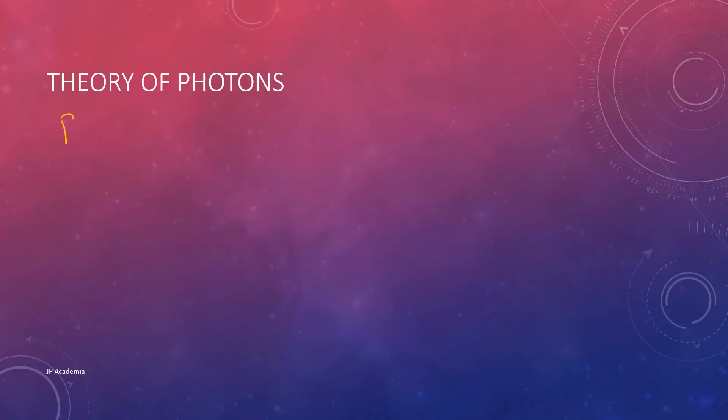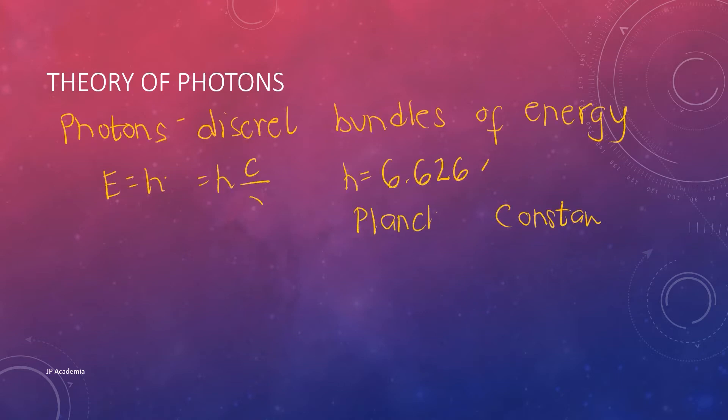Electromagnetic radiation is made out of particle-like discrete bundles of energy called photons. Each of these photons has an energy E that depends only on the frequency or the wavelength of the photon. We have this Planck's constant h, and this is equal to 6.626 times 10 to the negative 34 joules second.